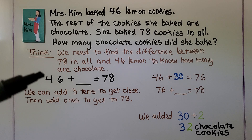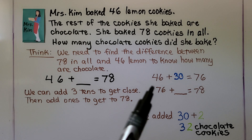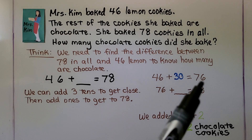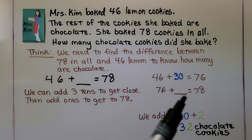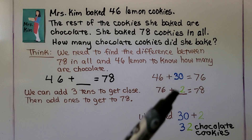We add 3 tens to 46 to get close to 78. 46 plus 30 equals 76. Now we need to find: 76 plus some number equals 78. If we add 2 more it will equal 78. So we added 30 plus 2, which is 32.